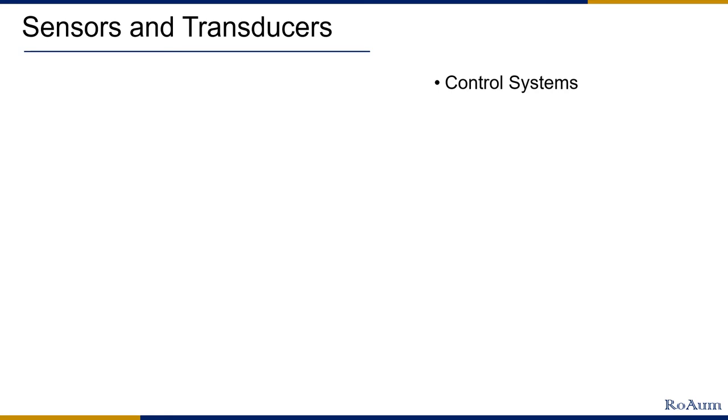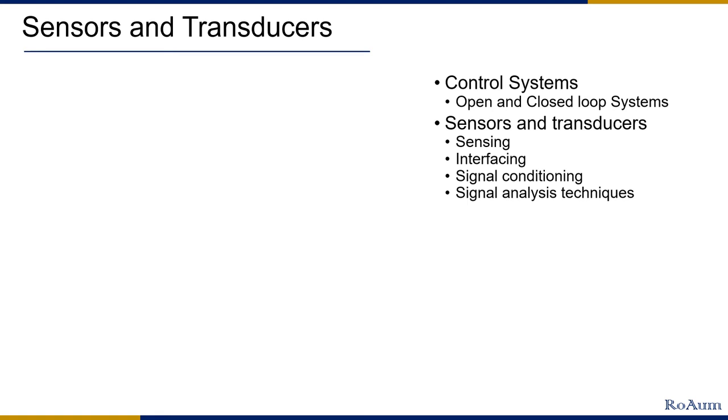Control systems are employed for controlling simple to complex robots using open or closed loop systems which involves reading sensors and driving actuators. Transducers and sensors enable the conversion of physical signals to electrical domain for easy processing, measurement and decision making. Based on the choice of transducer, the interfacing, conditioning, measurement and analysis techniques vary. The typical steps involved are sensing which involves conversion of physical signal to electrical signal, interfacing, signal conditioning and signal analysis techniques.